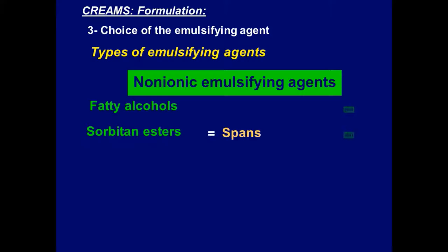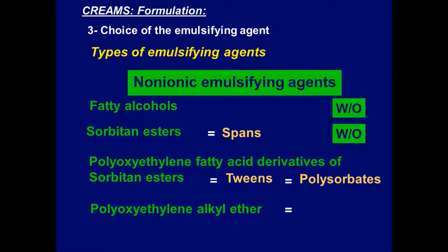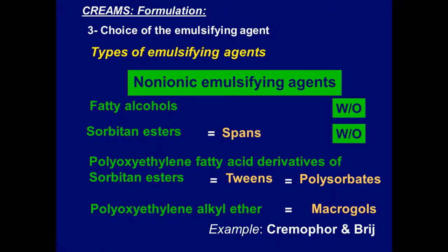This is a good revision on what we said before. Polyoxyethylene alkyl ether is also called macrogol. Examples of these macrogols are the poloxamers, because they also have different molecular weights. Cremophor and Brij are examples of macrogols or polyoxyethylene alkyl ethers. Polyoxyethylene fatty acid derivatives of sorbitan esters and polyoxyethylene alkyl ethers can both give water-in-oil or oil-in-water emulsions.